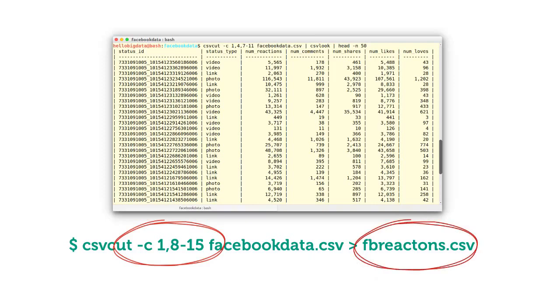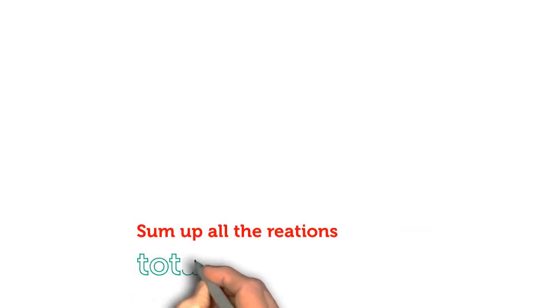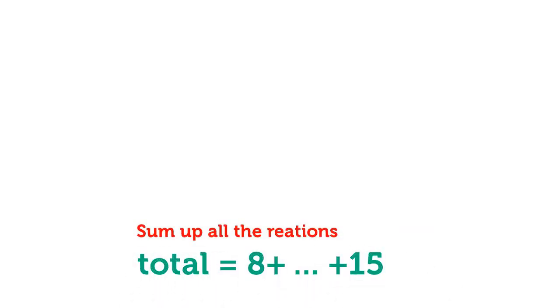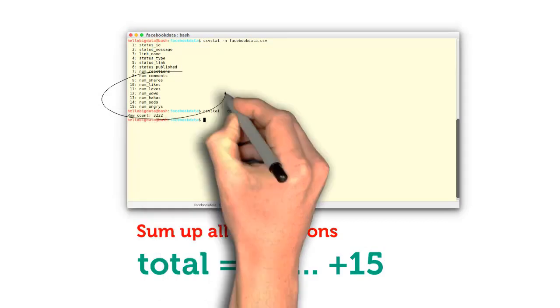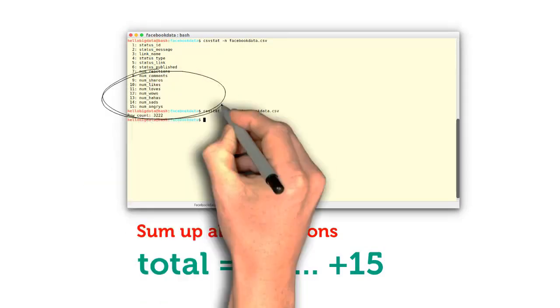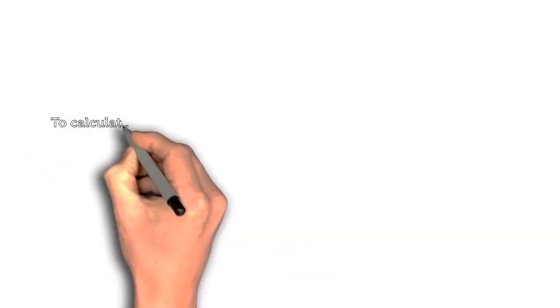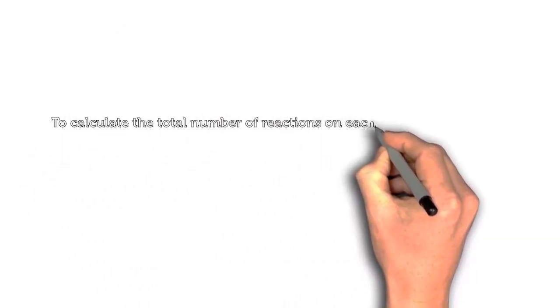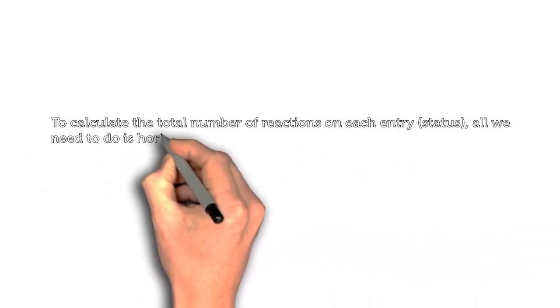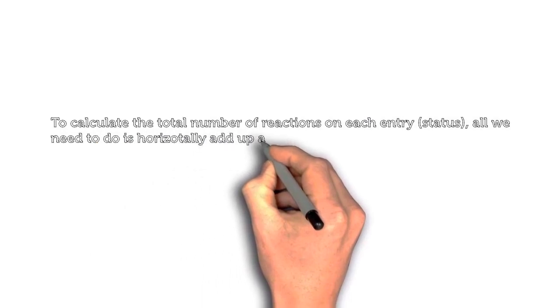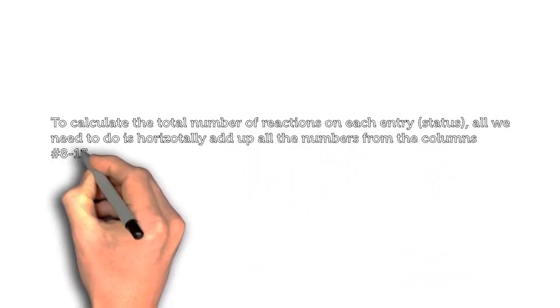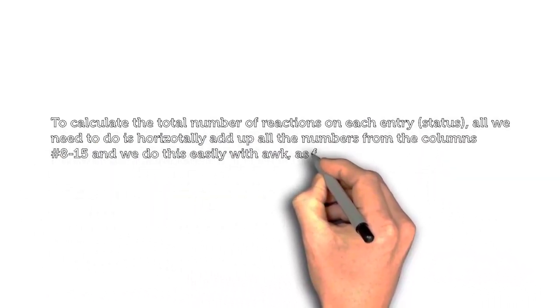The idea is to sum up all the reactions — columns 8 through 15 — on each Facebook status, and then find the status which had the maximum number of reactions. To calculate the total number of reactions on each entry, all we need to do is horizontally add up all the numbers from columns 8 to 15, and we do this easily with awk, as follows.